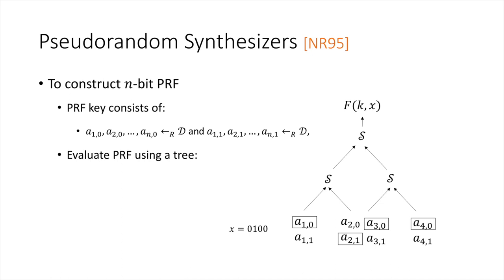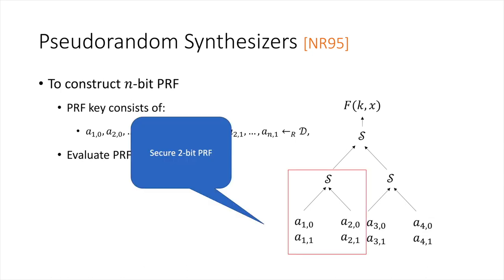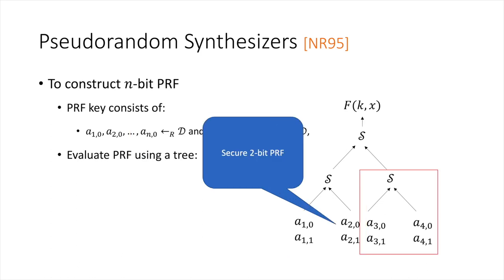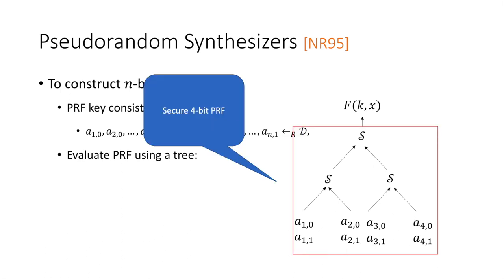We can argue about the security of this PRF recursively. At level one of the tree, each synthesizer is a secure 2-bit PRF simply by the definition of a secure synthesizer. So applying the synthesizer on the combined outputs of two such synthesizers yields a result indistinguishable from a secure 4-bit PRF. We can continue this argument to show that the entire construction is a secure N-bit PRF.